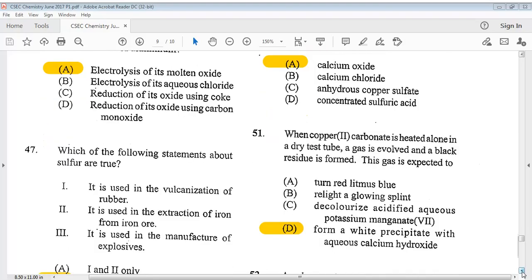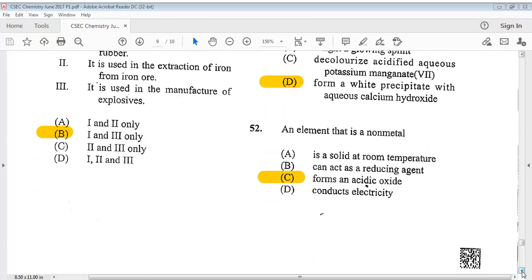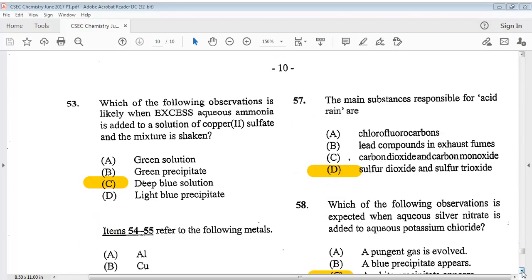Question 51. When copper 2 carbonate is heated alone in a dry test tube, a gas is evolved and a black residue is formed. The gas is expected to? The answer is D, form a white precipitate with aqueous calcium hydroxide. Question 52. The answer is C, an element that is non-metal. The answer is C, forms an acidic oxide. Question 53 says, which of the following observations is likely when excess aqueous ammonia is added to a solution of copper 2 sulfate and the mixture is shaken? The answer is D, blue solution.